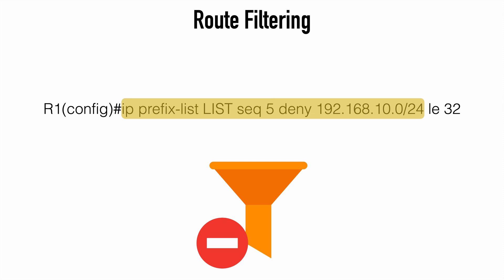For example, here you can see we are denying routes that match the 192.168.10.0 network with a subnet mask of 255.255.255.0 or slash 24 in CIDR notation. At the end, we can optionally use the keywords GE or LE, which means greater than or equal to, and less than or equal to. In this case, we have the LE value, meaning that we're going to match routes on the slash 24 prefix length all the way to the slash 32 prefix length.